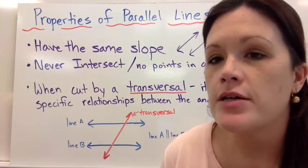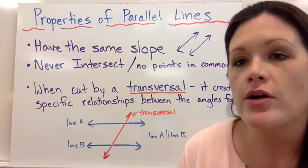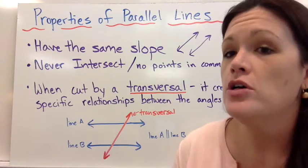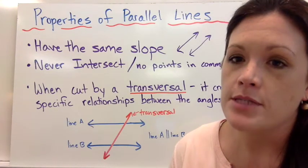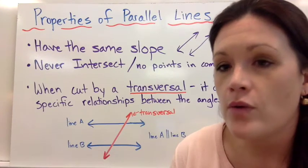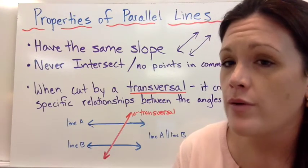Let's talk for a few minutes about parallel lines and what happens when they're cut by a transversal. What we know about parallel lines up to this point is that they have the same slope and they don't intersect, therefore they have no points in common.